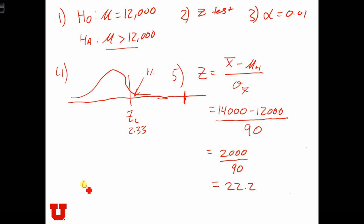So in step six, we reject the null. This neighborhood does not have a consumption of 12,000 kilowatt hours. It's much more likely that the average consumption in that neighborhood is more than 12,000 kilowatt hours.